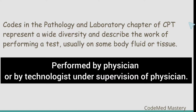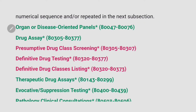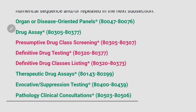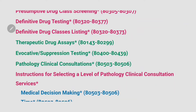All these services are performed by a physician or by technologists under the supervision of a physician. Let us look at the index of Pathology and Laboratory. In Pathology and Laboratory we have codes for organ or disease oriented panels, drug assay, presumptive drug class screening, definitive drug testing, definitive drug classes listing, therapeutic drug assays, evocative suppression testing, and pathology clinical consultation.